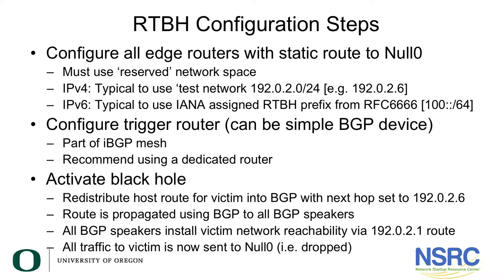After you've configured the edge routers with a static route to null zero, you also have to configure a trigger router. The trigger router does not have to be a beefy device — it can just be a very simple BGP-speaking device. It needs to be part of the IBGP mesh, and it is recommended that it be a dedicated router that just acts as the remotely triggered black hole filtering trigger router.